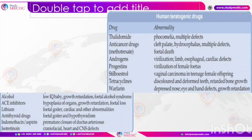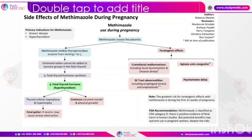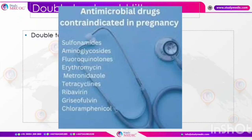Alcohol can cause low IQ, growth retardation, and fetal alcohol syndrome. ACE inhibitors mainly cause renal hypoplasia, growth restriction, and oligohydramnios. Lithium is specifically associated with the fetal cardiac anomaly — the Ebstein anomaly. Antithyroid drugs can cause fetal goiter and hypothyroidism; carbimazole is known to cause aplasia cutis. Indomethacin, aspirin, and other NSAIDs can cause premature closure of the ductus arteriosus, especially if given in the late second and third trimester. Isotretinoin can cause craniofacial, cardiac, and CNS defects. Methimazole can also cause aplasia cutis and other abnormalities.